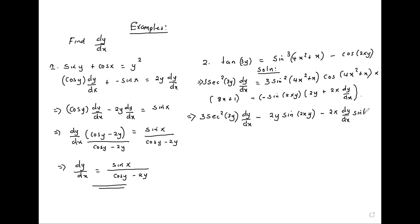Is equal to the right hand side, so 3 sin²(4x² + x) cos(4x² + x) multiplied by 8x + 1. Then factor out dy/dx.